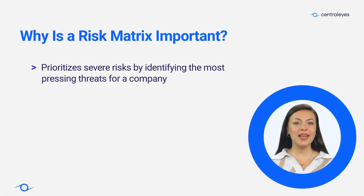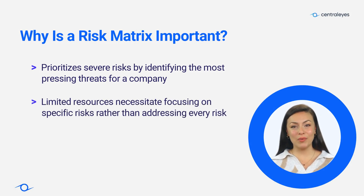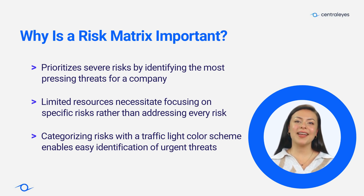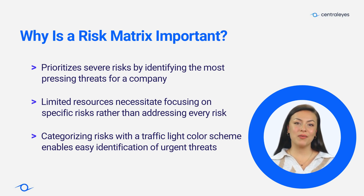A risk matrix helps prioritize the most severe risks faced by a company, considering that resources are limited and not all risks can be addressed. Categorizing risks using a traffic light color scheme on the matrix allows for easy identification of the most urgent threats, enabling focused attention on them. Ultimately, organizations need to accept a certain level of risk to achieve success.